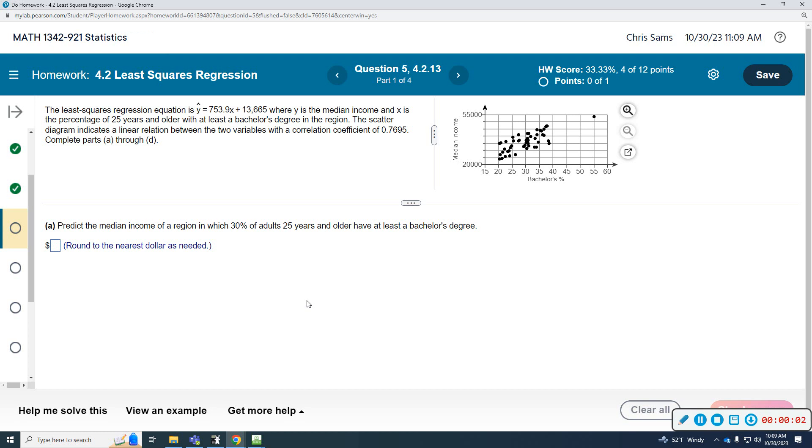Question number five says the least squares regression equation is y-hat equals 753.9x plus 13,665, where y is the median income and x is the percentage of 25-year-olds and older with at least a bachelor's degree in the region. The scatter diagrams indicate a linear relationship between the two variables with the correlation coefficient of 0.7695. We're going to complete parts A through D.